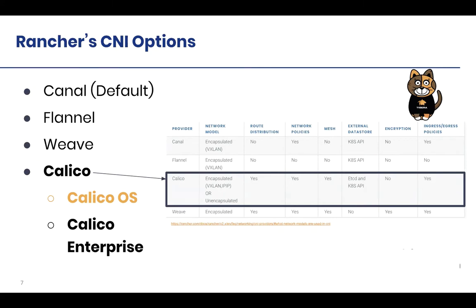Although Calico is not only a CNI option, that's pretty much the foundation of what we do — starting as a CNI, but we build a lot more, especially in the enterprise solution. Just to remind you: if you go to Rancher today and want to launch an RKE cluster, you have four supported out-of-the-box solutions. The default is Canal, which is Flannel for networking and Calico for policy enforcement. You also have Flannel, Weave, and of course Calico.